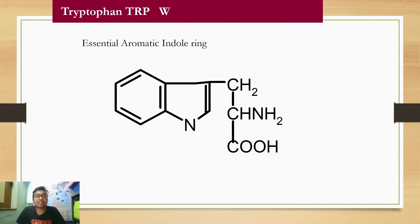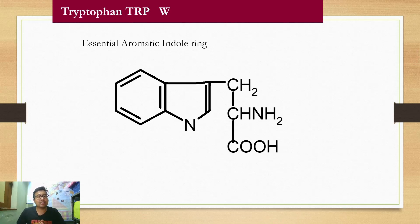The first thing you need to know is the structure of tryptophan. It has got an indole ring. Even if you cannot draw it, you should know that it contains an indole ring. Often the examiner might give you a piece of pen and paper and ask you to draw tryptophan on the viva table — it is that important.